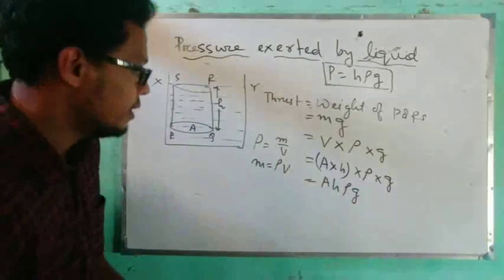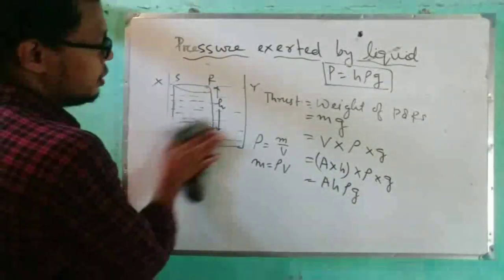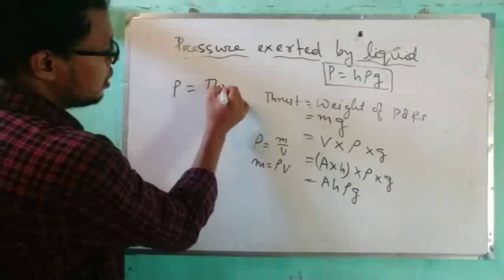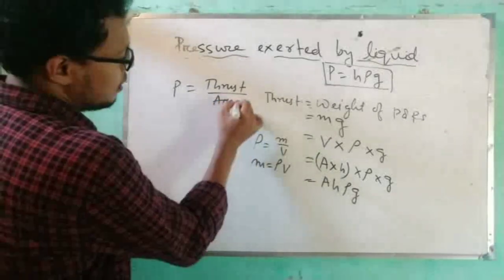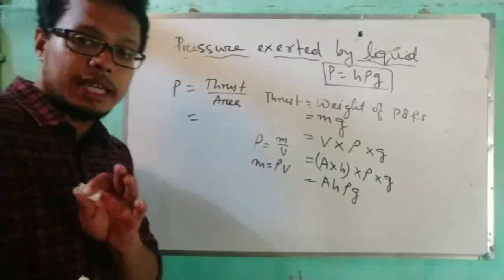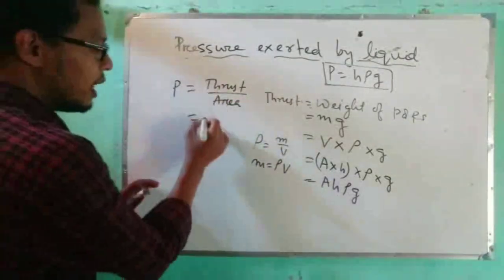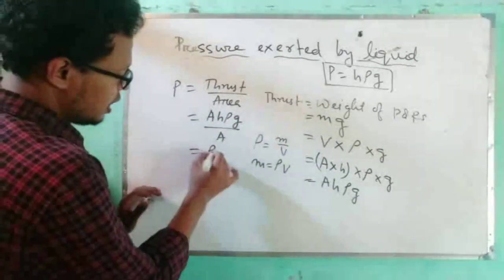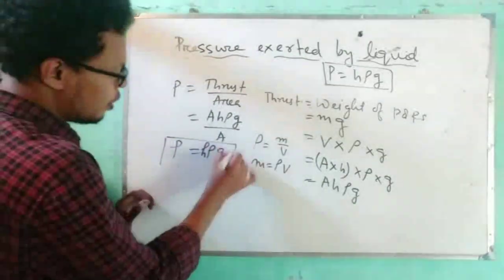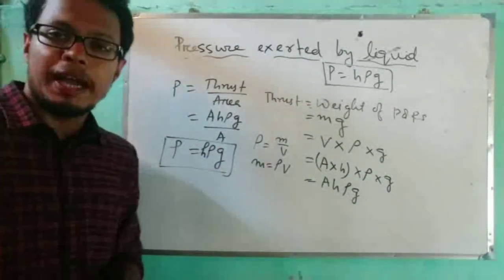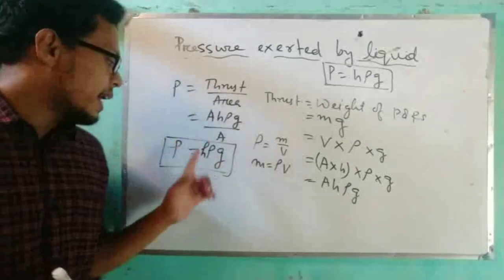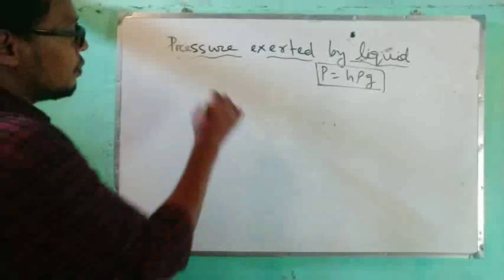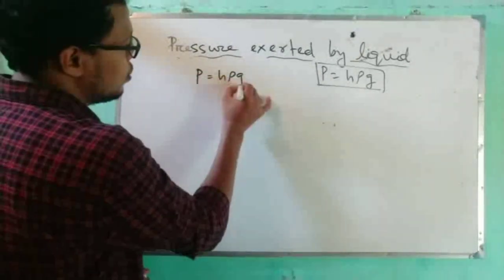To find pressure: P = thrust / area = (A × h × ρ × g) / A = h × ρ × g. This is the proof of the pressure exerted by a liquid at depth h. The formula is P = hρg.